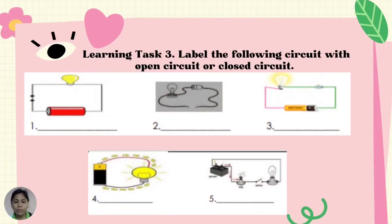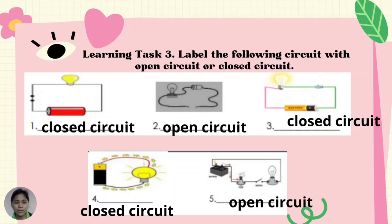For learning task number 3: Label the following circuits with open circuit or closed circuit. For number one: closed circuit; two, open circuit; three, closed circuit; four, closed circuit; and five, open circuit.